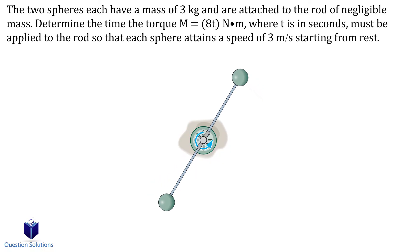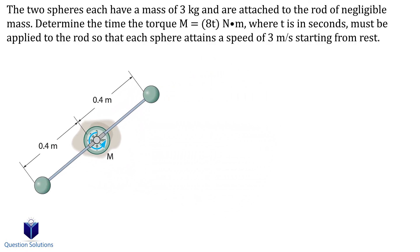Let's take a look at one last example. In this problem, we need to find the time it would take for the sphere to attain a speed of 3 meters per second. We can head straight into an equation of angular impulse and momentum. We're going to look at just the z-axis, since that's the axis the spheres are spinning around.